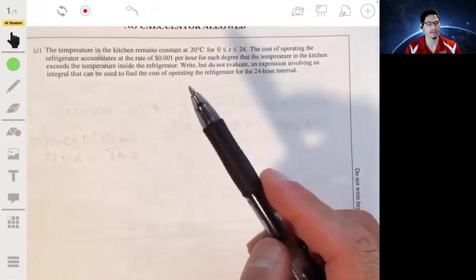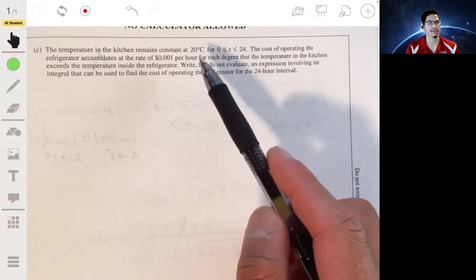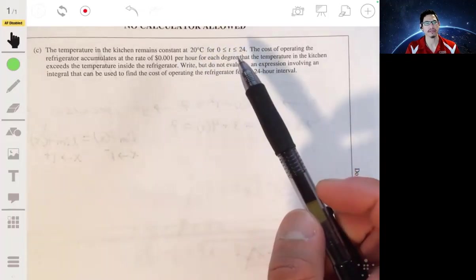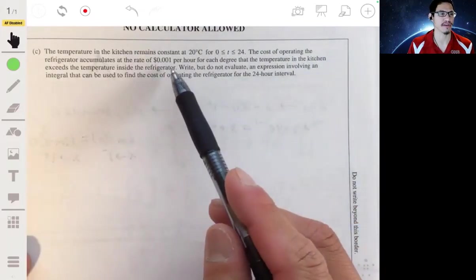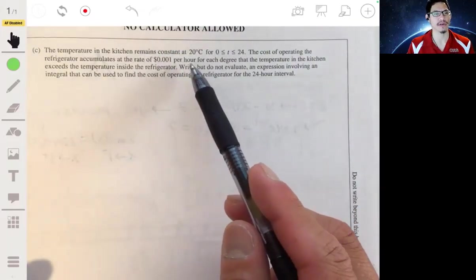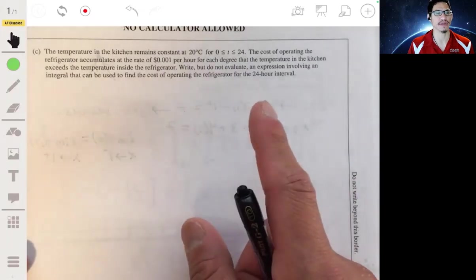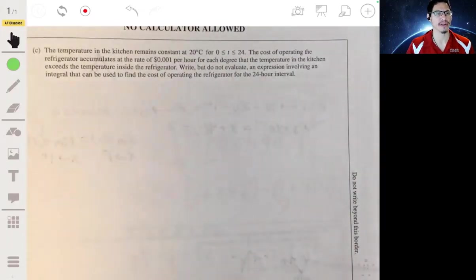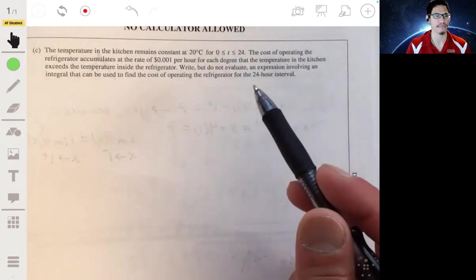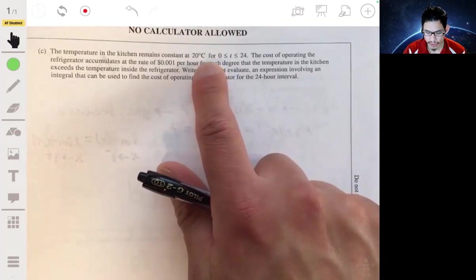Part C. We're told the temperature in the kitchen remains constant at 20 degrees Celsius for T between 0 and 24. And the cost of operating the refrigerator accumulates at the rate of .001 dollars per hour for each degree that the temperature in the kitchen exceeds the temperature inside the refrigerator. Write, but do not evaluate an expression involving an integral that can be used to find the cost of operating the refrigerator for a 24-hour interval.